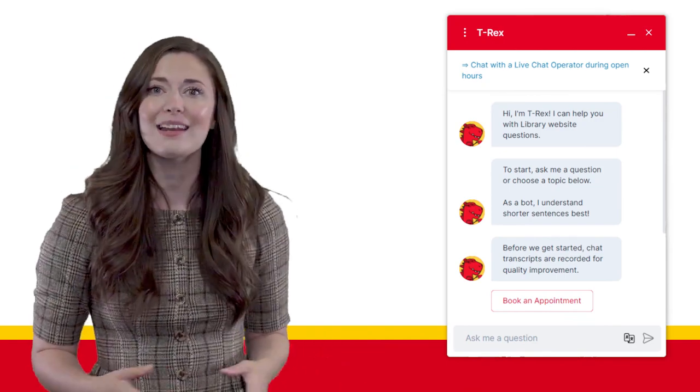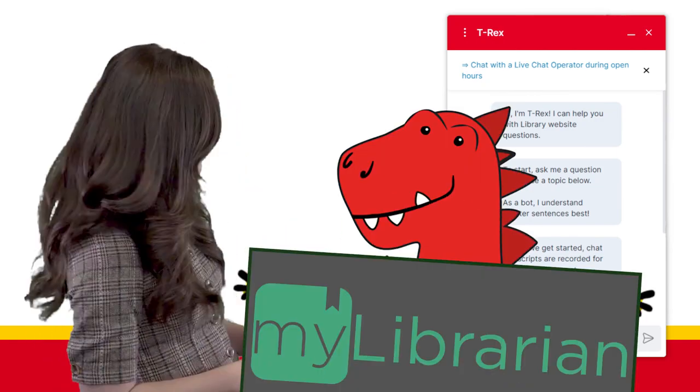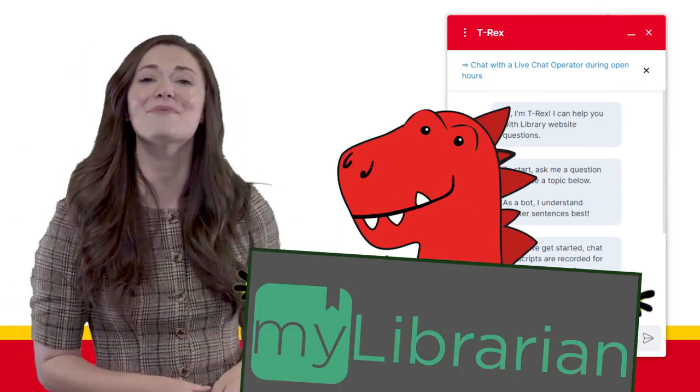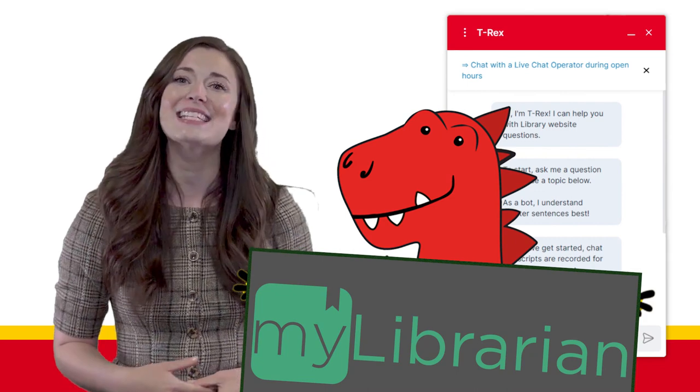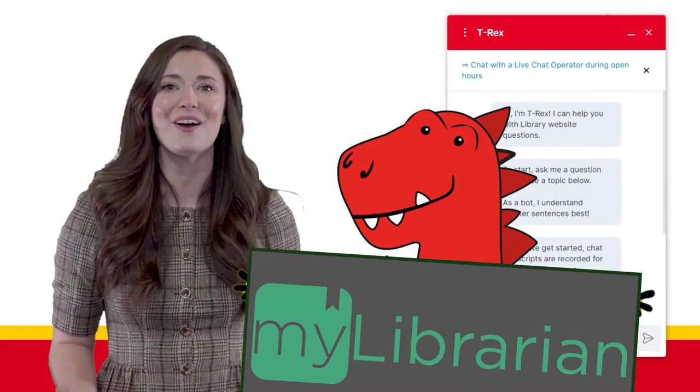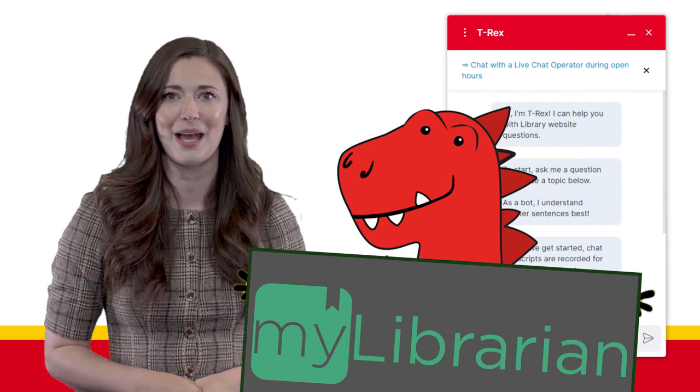As you search the collection, remember that library staff are here to help. During business hours, there's always a staff member online and available to chat. You can also sign up for the My Librarian program to connect with a librarian for personalized, ongoing assistance throughout your time at UCalgary. You should now be able to conduct both a quick and advanced search of the library collection. Once you pick up these basics, navigating the library becomes much easier. And remember, the library is here to support you.